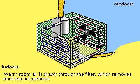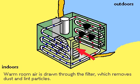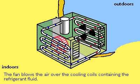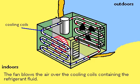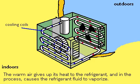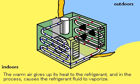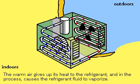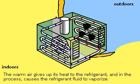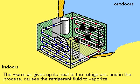Warm room air is drawn through a dust filter by a fan, then blown over the cooling coils, which circulate the refrigerant in its liquid state. As the room air flows by the coils, it causes the liquid in the coils to evaporate, and in the process, heat is absorbed by the refrigerant as it turns to gas. The cooled air is blown back into the room.